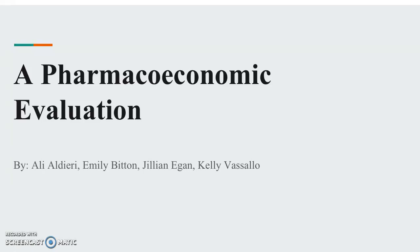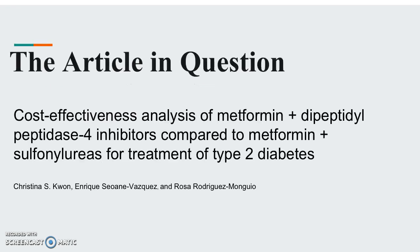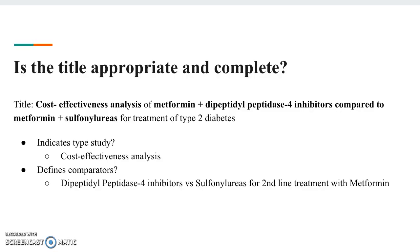This is Group 2 and we are doing a pharmacoeconomic evaluation. The article in question is a cost-effectiveness analysis of metformin and dipeptidyl peptidase-4 inhibitors compared to metformin and sulfonylureas for the treatment of type 2 diabetes.